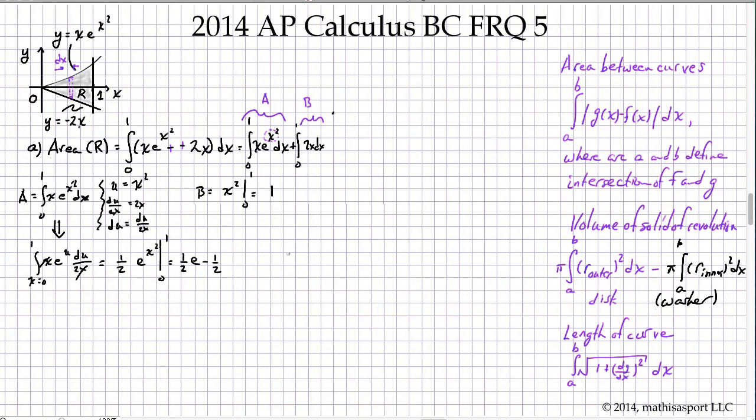So area sub R equals 1. We said it was A plus B. And that's going to be e plus 1 over 2. I've just simplified. I've just combined this with this. That's our result. Okay, let's take a look at part B.